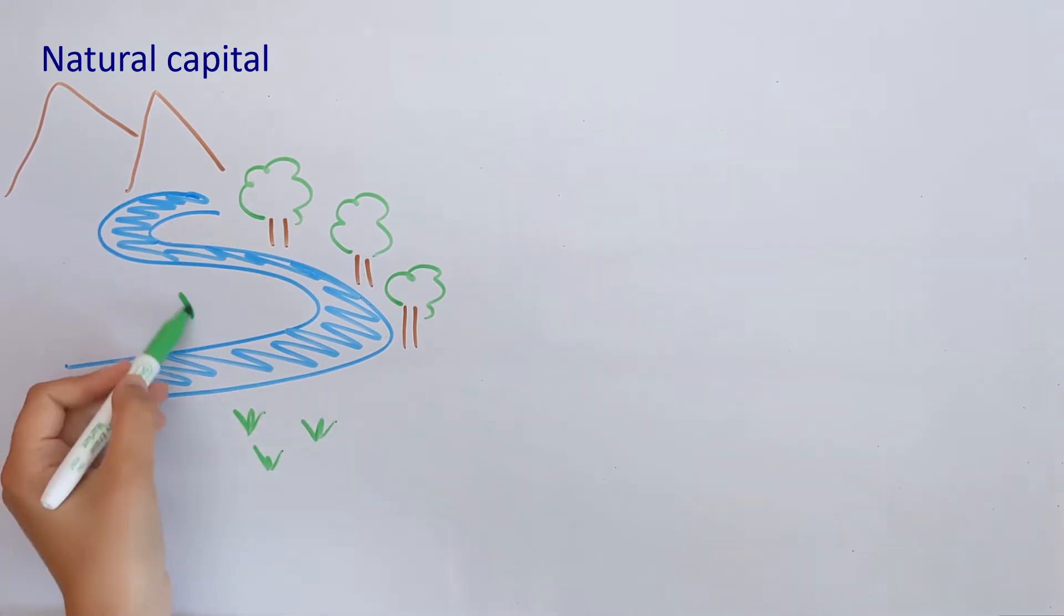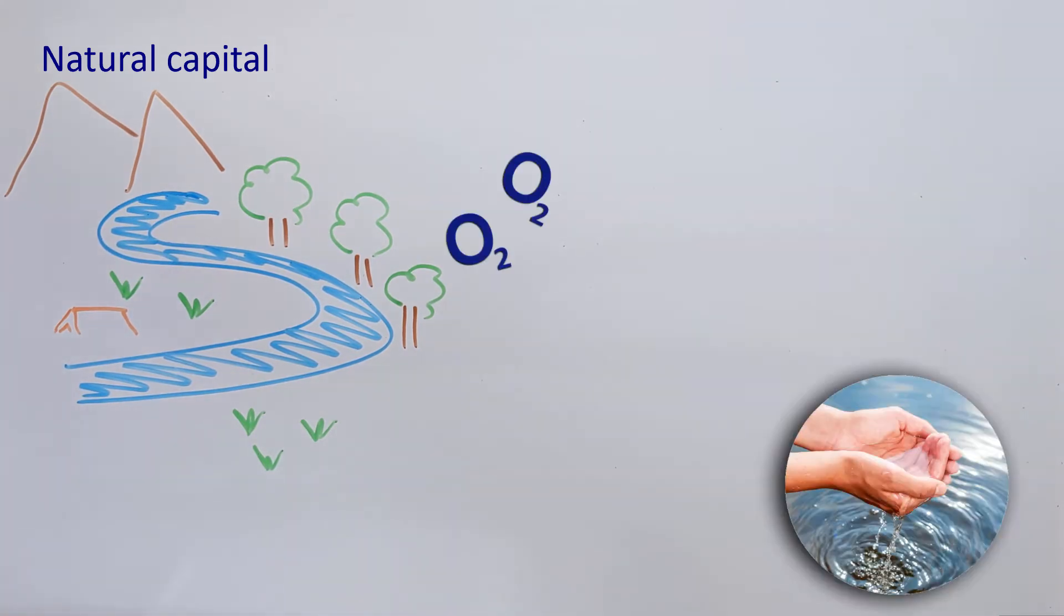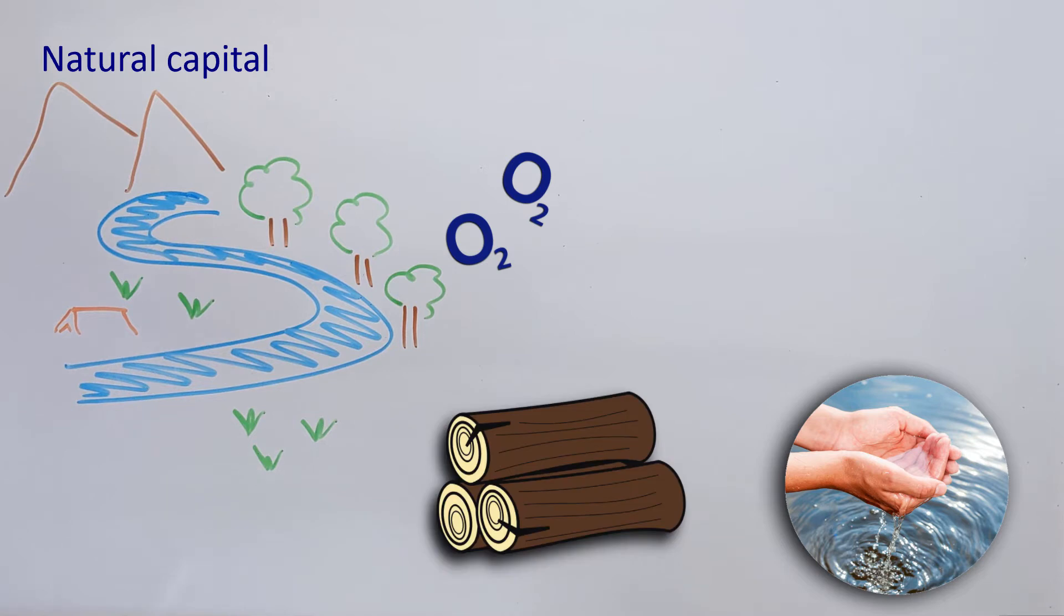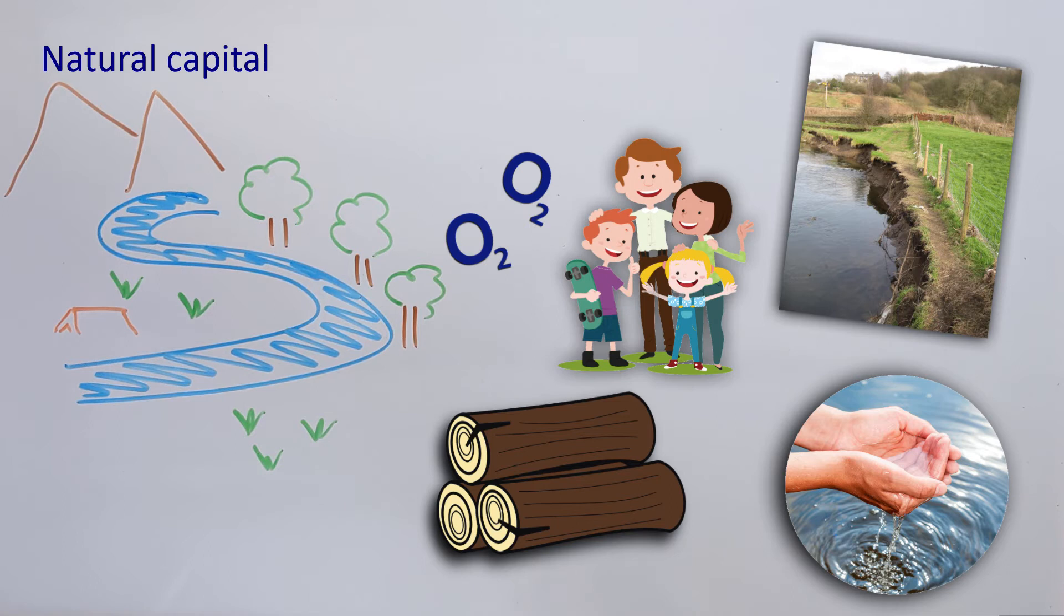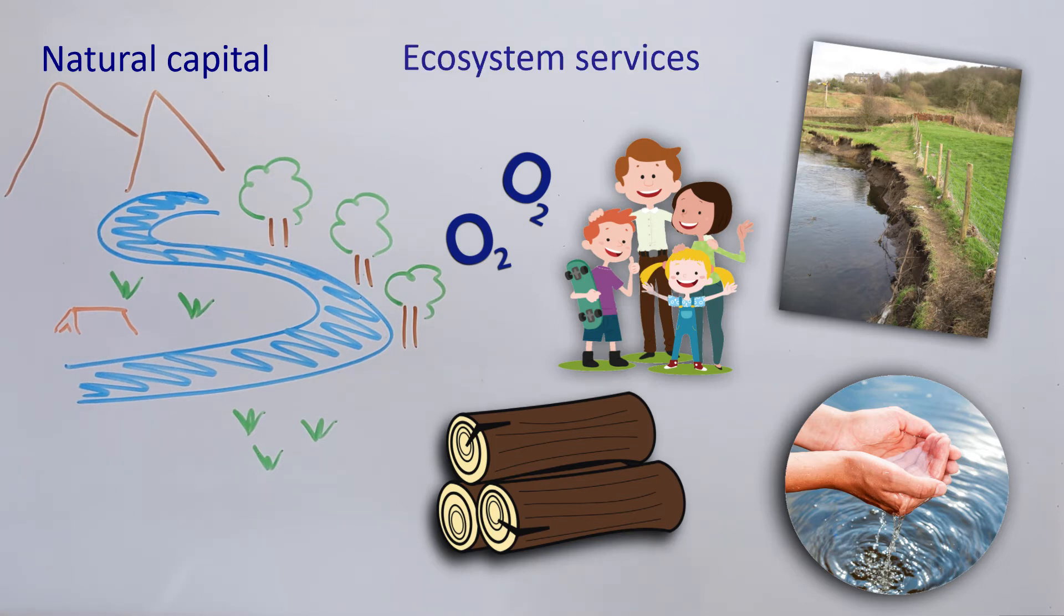An ecosystem can provide an endless number of goods and services, things that people use, many of which we would not survive without. A few include producing oxygen, cleaning air and water, providing building materials and fuel like wood, preventing erosion, as well as making people who visit the ecosystem feel better. These goods and services are known as ecosystem services.